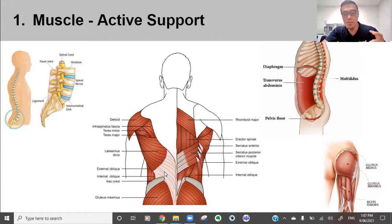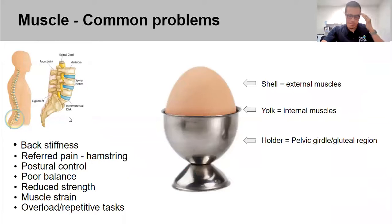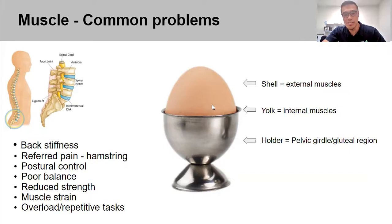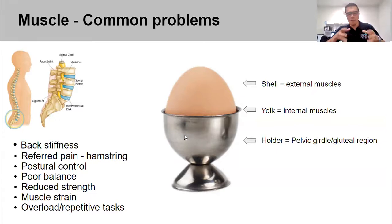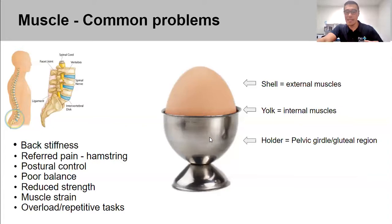A good metaphor for this is an egg. The outer shell represents your external muscles — if they're not strong, the whole structure is at risk. The egg yolk represents your internal muscles — if the insides aren't well, they won't provide good nutrition. The egg holder is your pelvic girdle and lower limb muscles, giving you power when you bend, lift, and walk. All these muscles perform a role in supporting your spine.